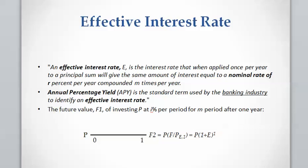Annual Percentage Yield, or APY, is the term used in the banking industry for effective interest rate. For example, when you read that an interest rate is 6% compounded monthly, it is a bit confusing because it doesn't tell you what the actual interest rate per year would be. Effective interest rate is the per-year rate that gives you exactly the same interest as using the nominal rate compounded multiple times a year.